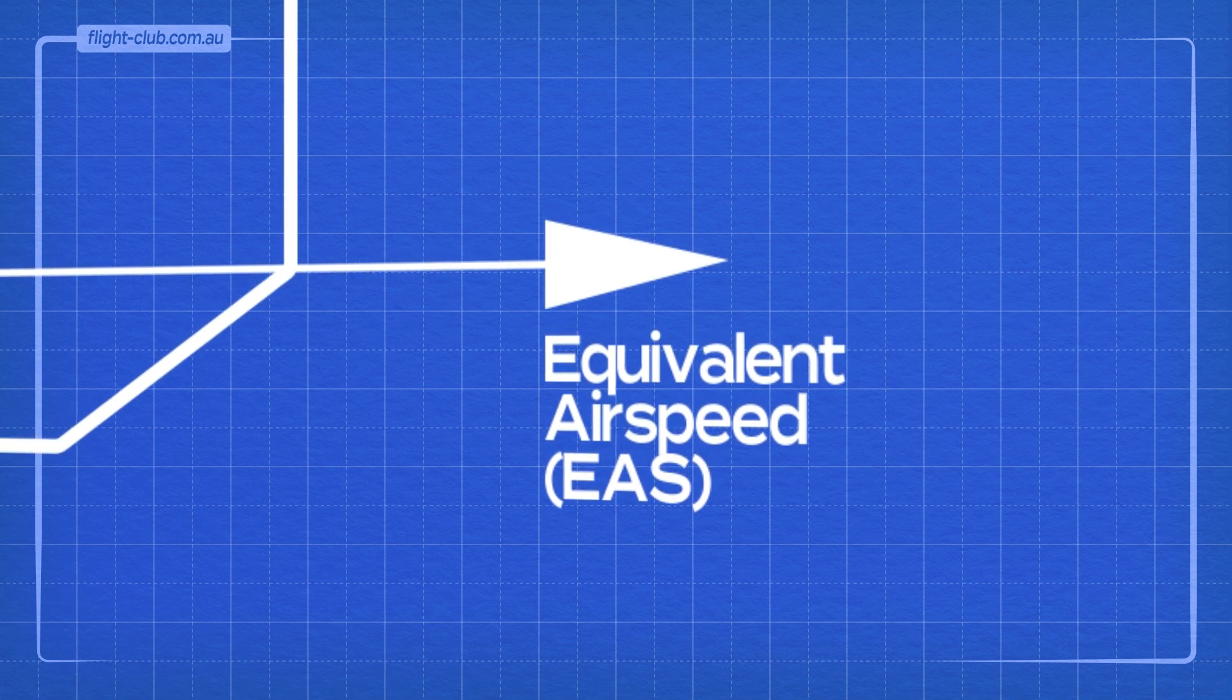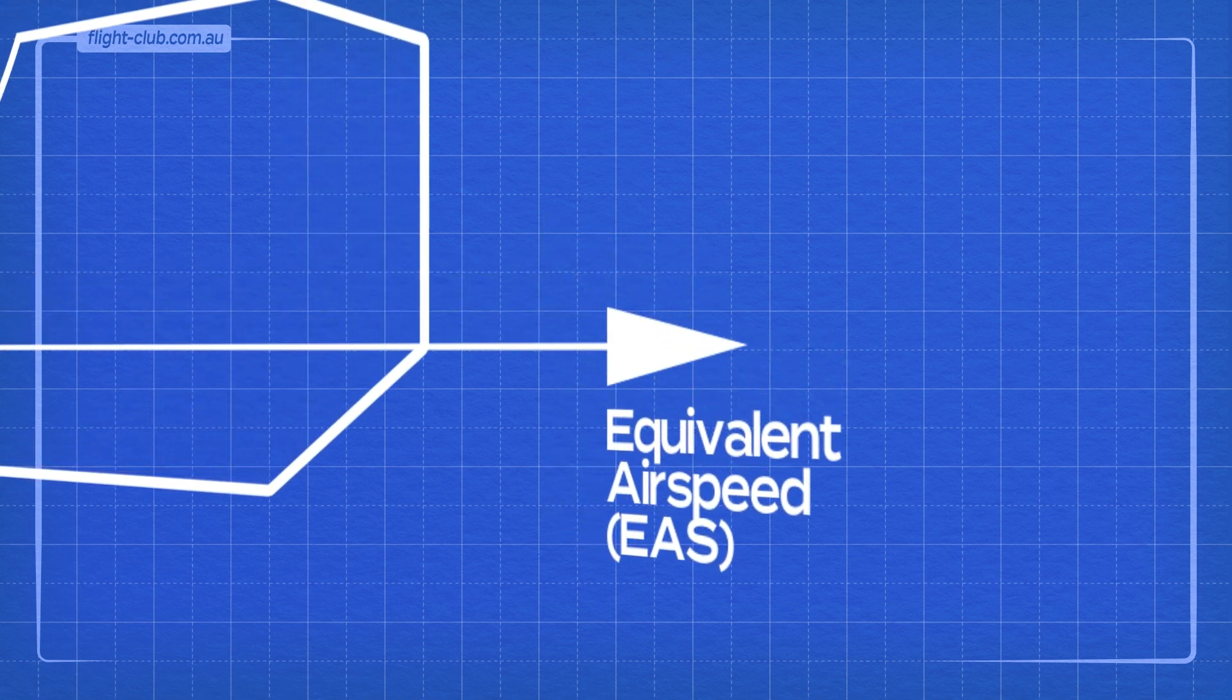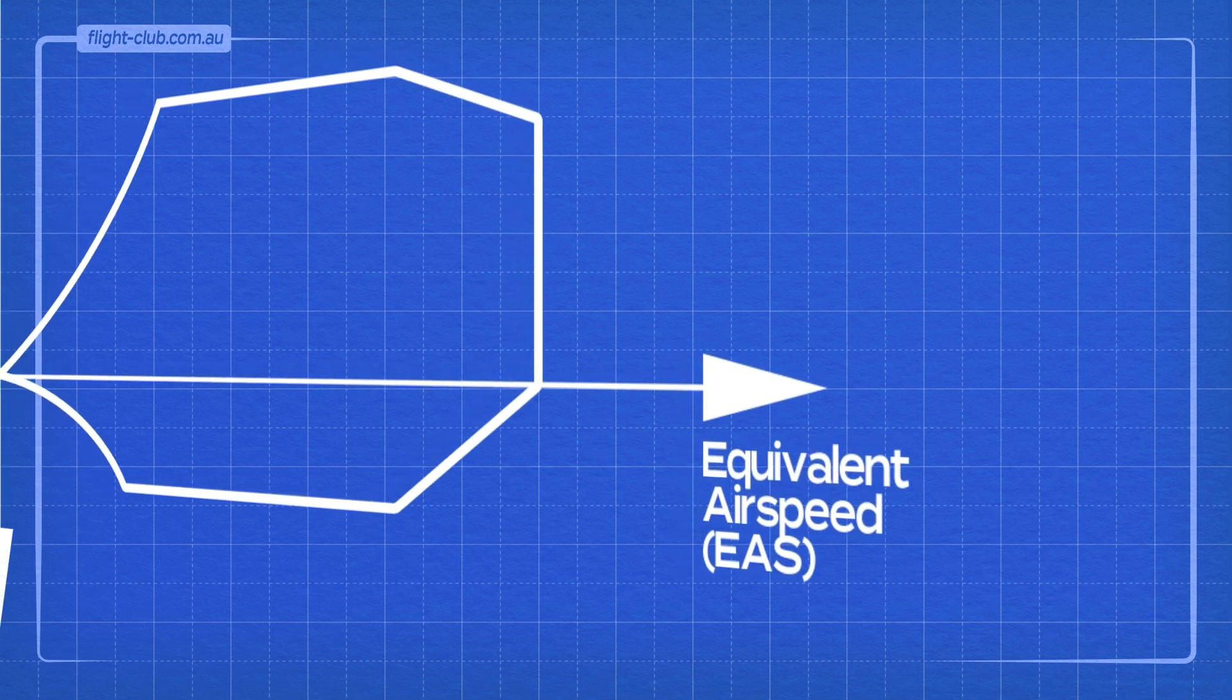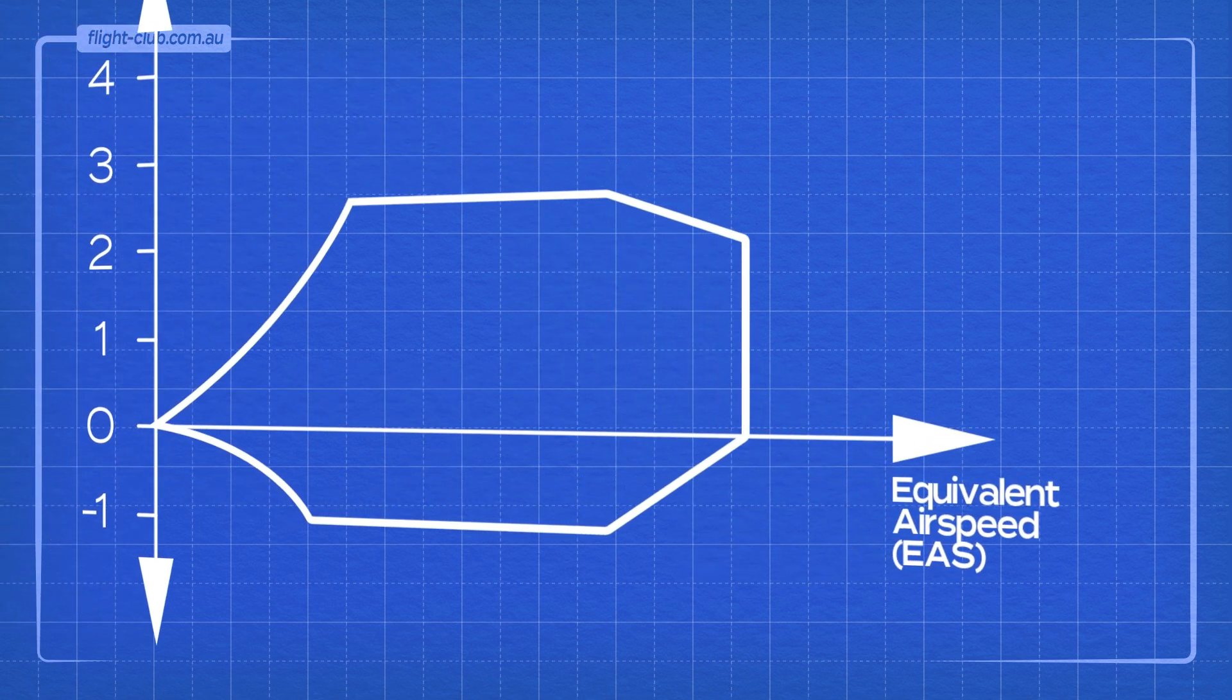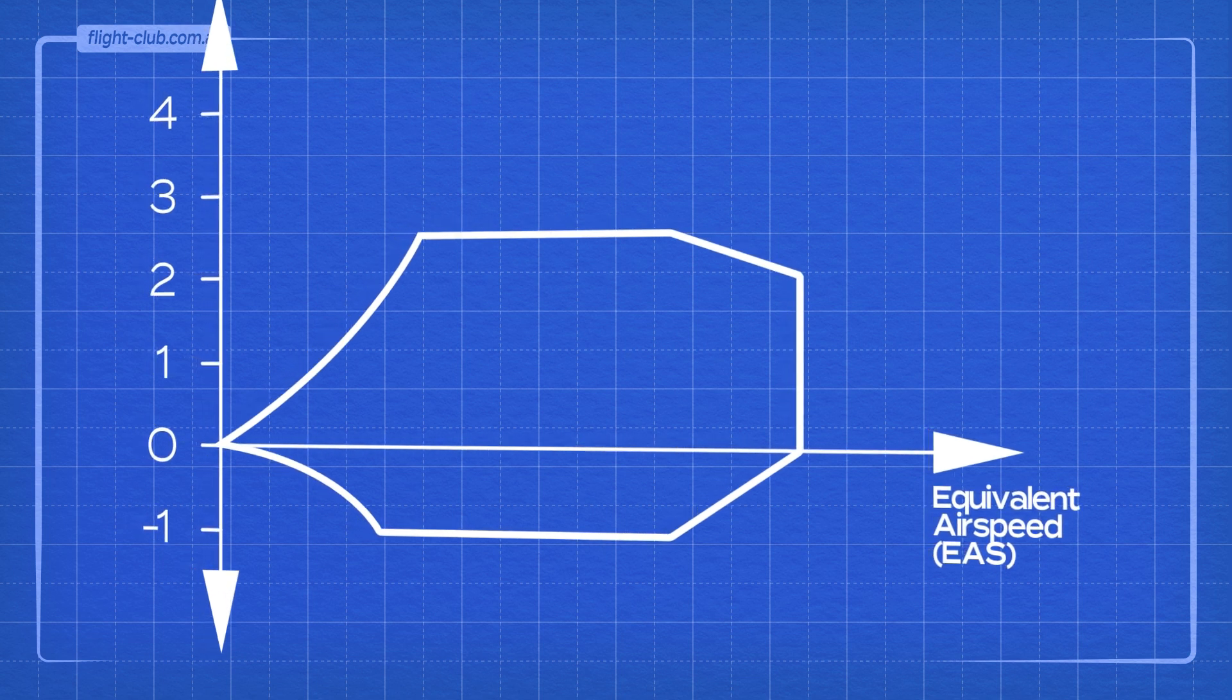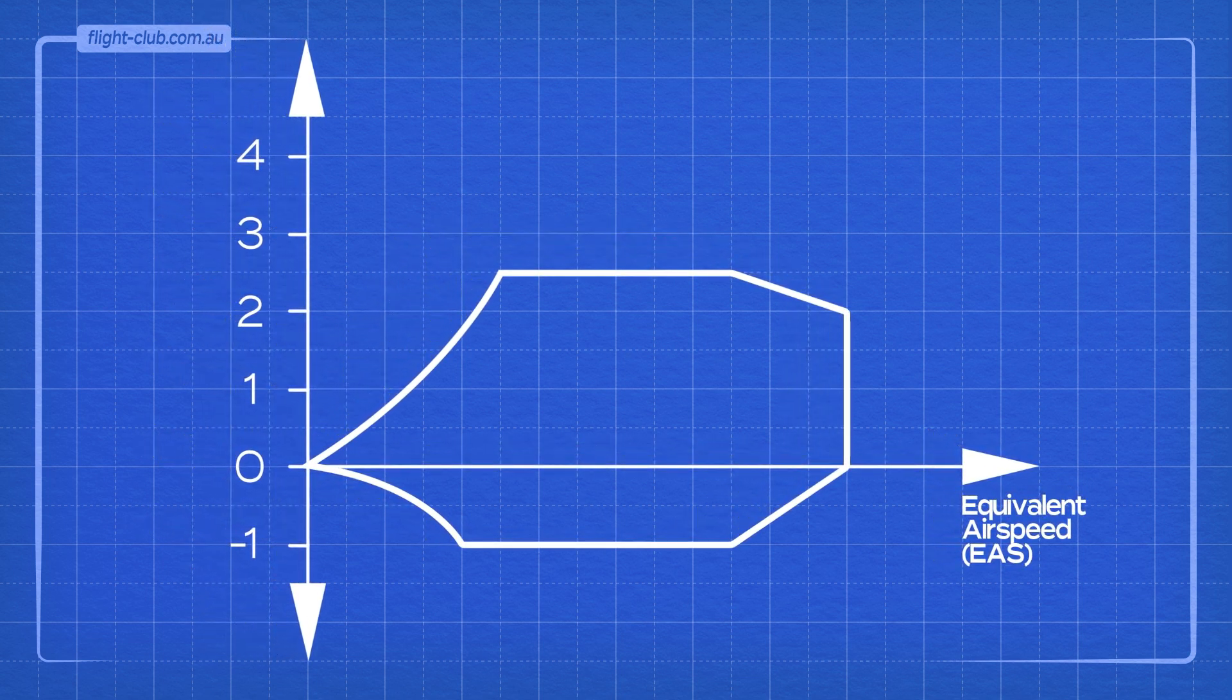The difference between equivalent airspeed and calibrated airspeed is negligible in the lower range of speeds. Only at higher speeds and higher altitudes does the difference emerge due to compressibility.